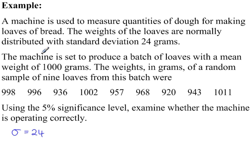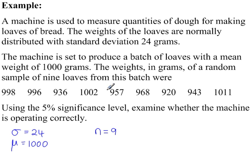The machine is set to produce loaves with a mean weight of 1000 grams — that's the population mean. We've got a sample of 9 and the mean of this sample. So if you add them up and divide by 9, that gives us x̄.